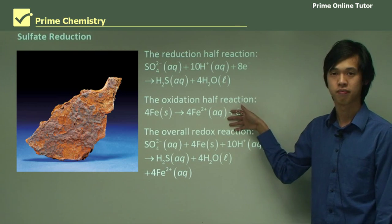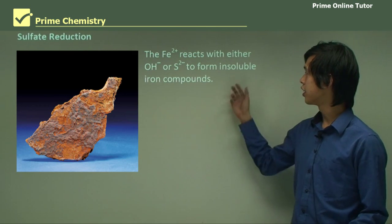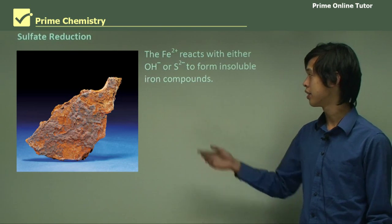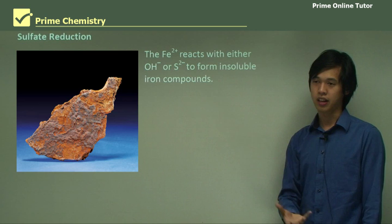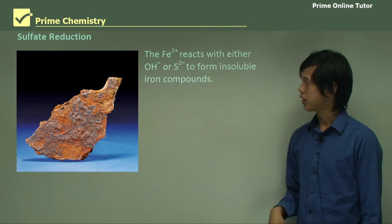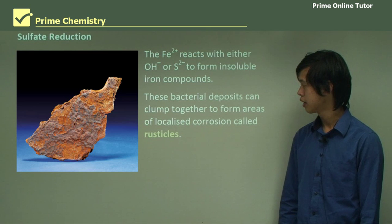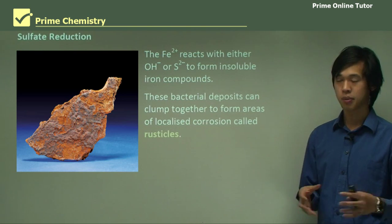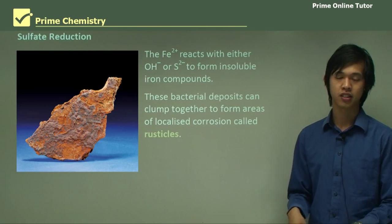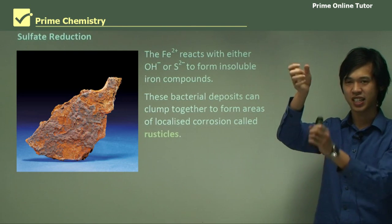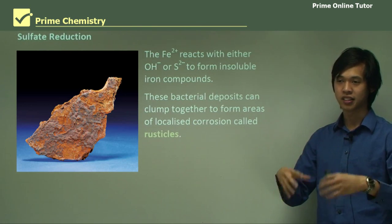You can derive it once you know these two half-reactions. What happens is those ferrous ions, Fe²⁺, react with either OH⁻ ions or sulfide ions to form really insoluble iron compounds. Iron sulfide may have a yellowish hue, and Fe(OH)₂ can sometimes be whitish or brown depending on what oxidation state the iron is in. These bacterial deposits clump together to form areas of localized corrosion, which we call rusticles — a portmanteau of rust and icicle — because they form long, stalactite-looking things on the steel.